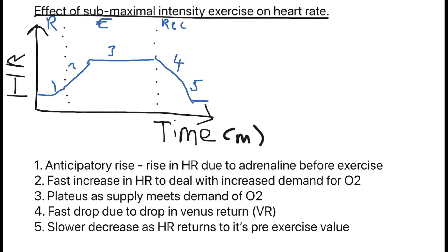Then during recovery you have a sharp decrease. Number four, it's a sharp decrease due to the drop in venous return. Now venous return we will look at in the next video which will look at the vascular shunt mechanism. Finally, fifth, you have a slower decrease in heart rate as it returns to its pre-exercise value to remove the waste products such as carbon dioxide.